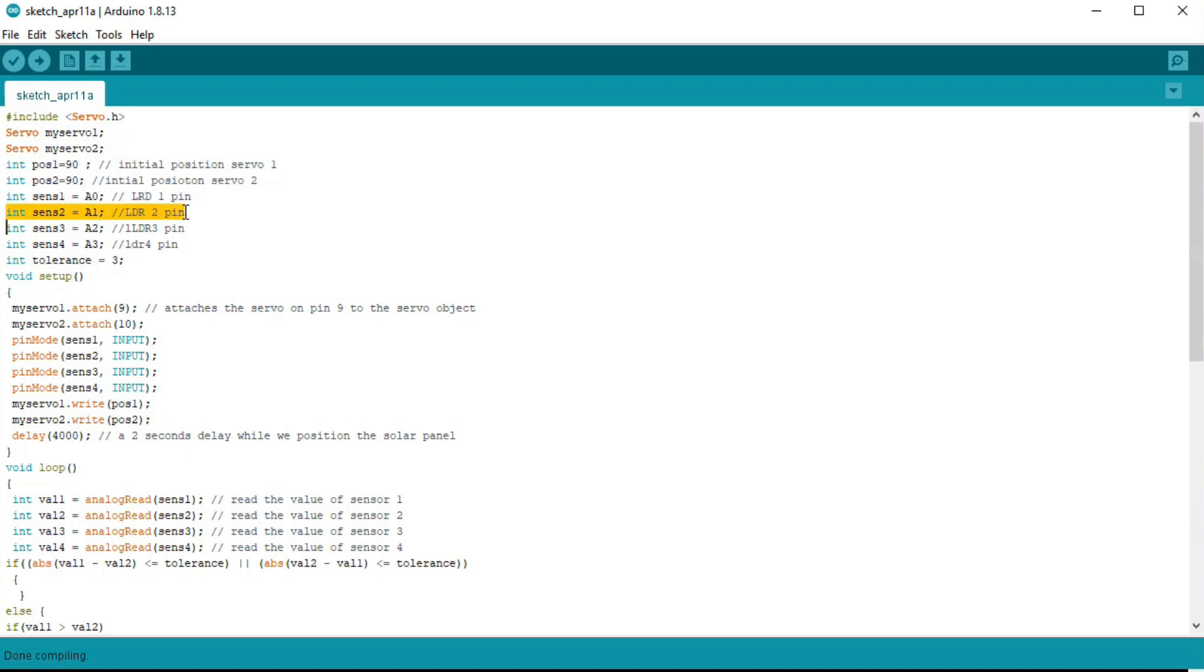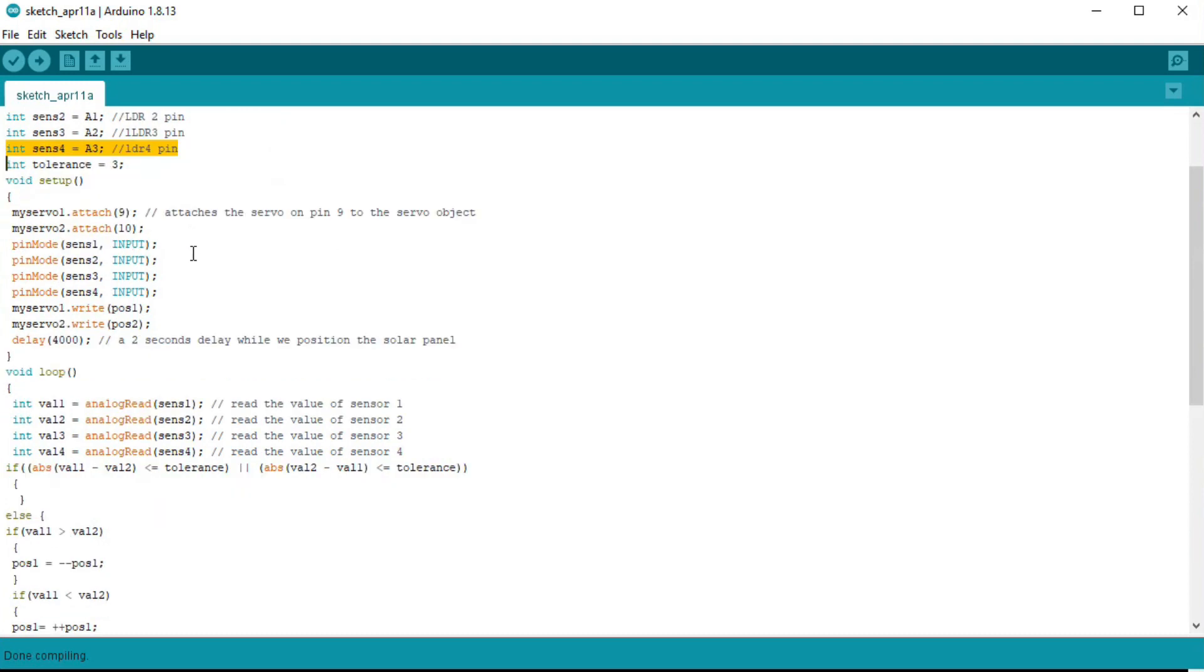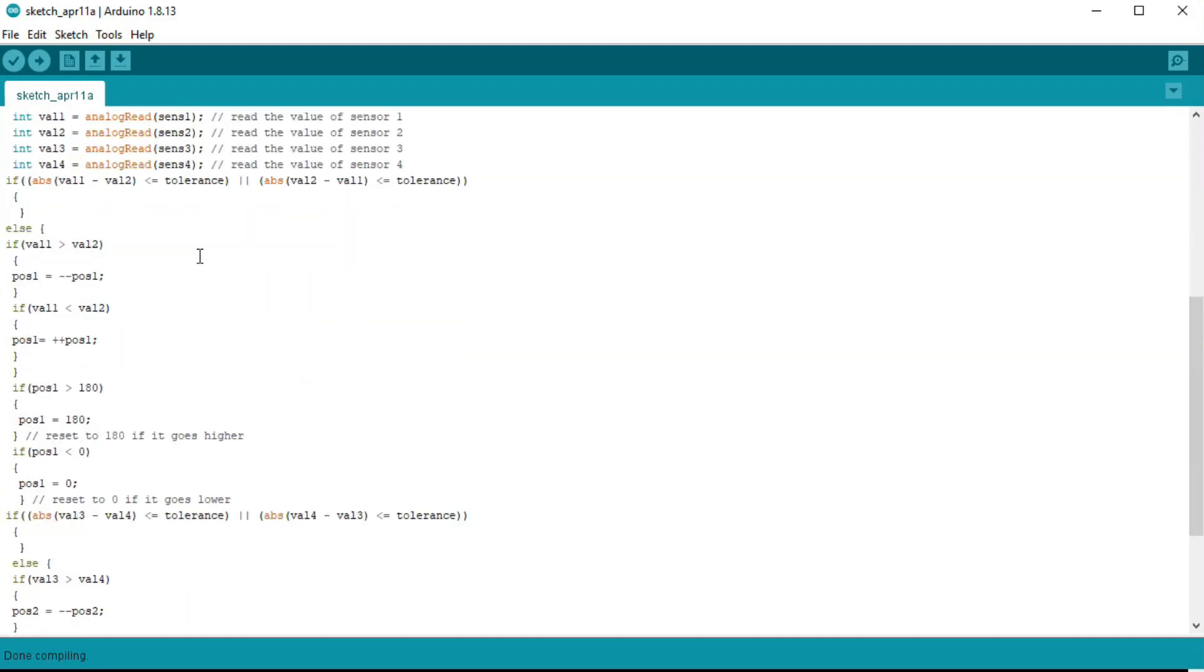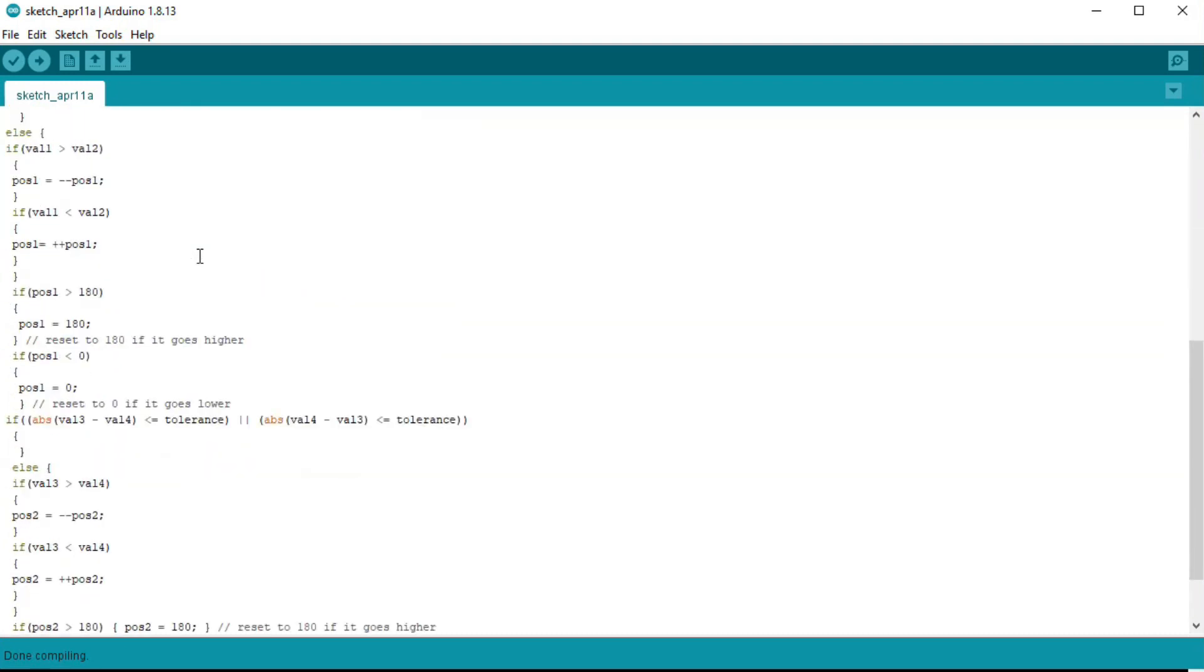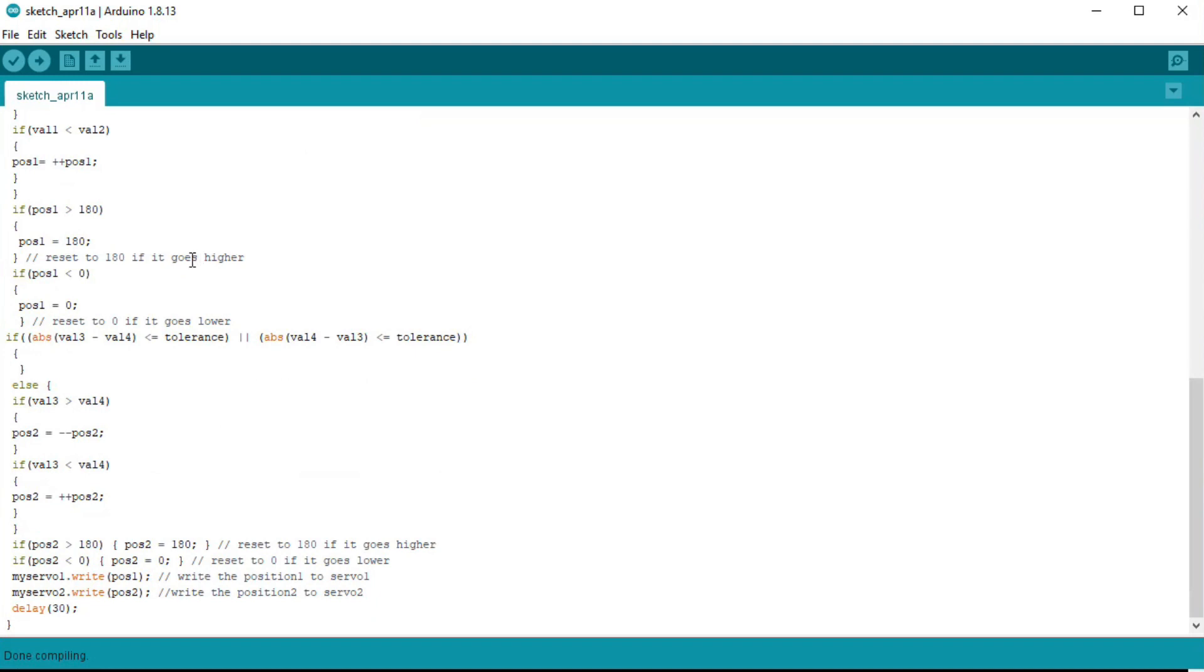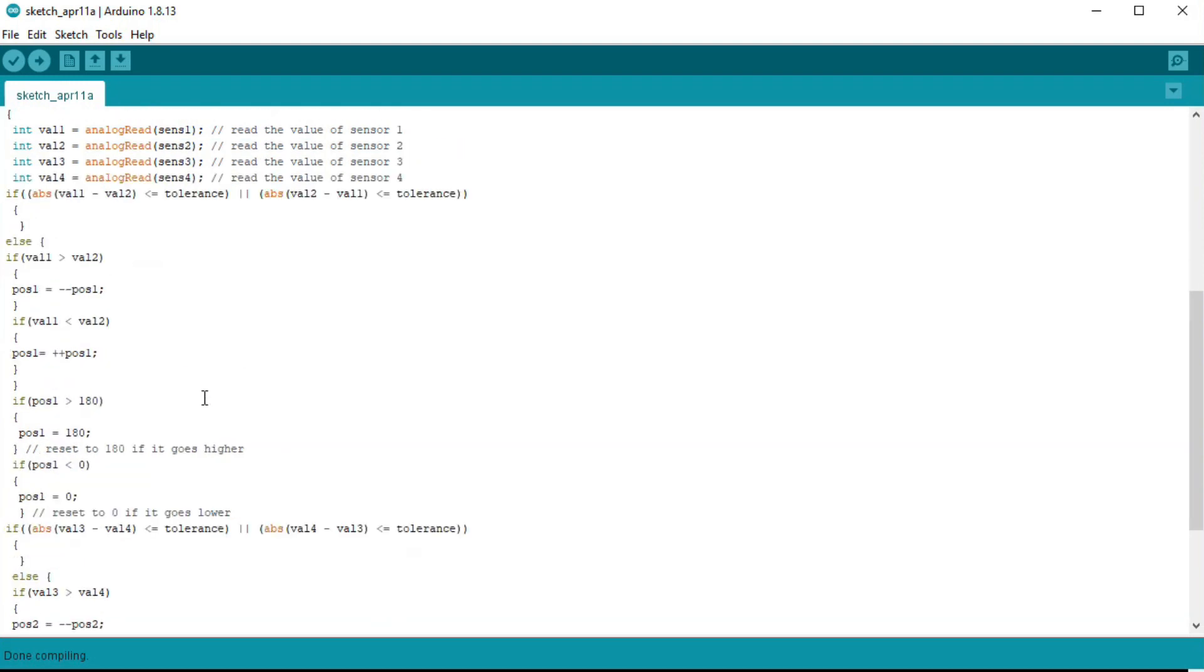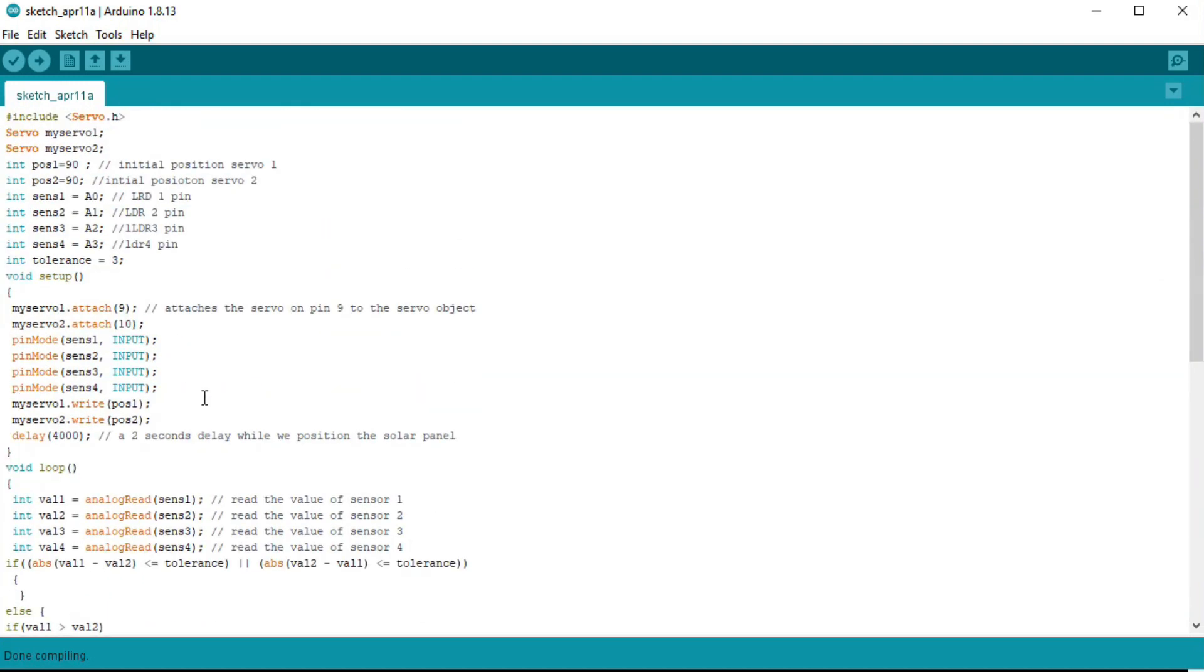We sense the values of LDR 1, 2, 3, and 4. According to these values, we can rotate the servomotor using if-else conditions to find maximum light. You can find the code in the description or comment section.